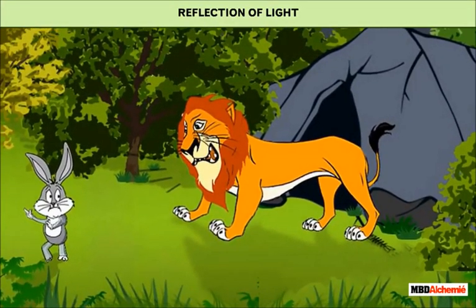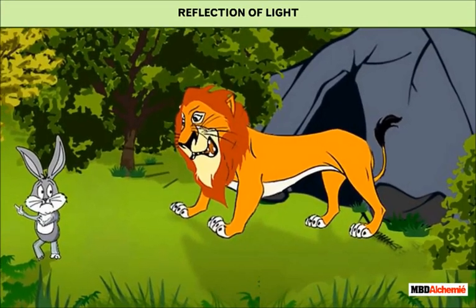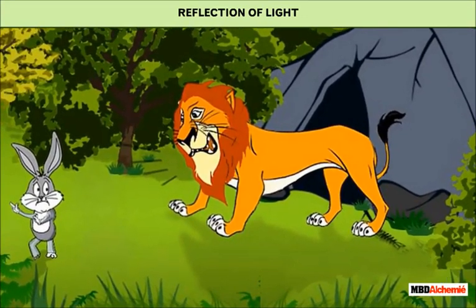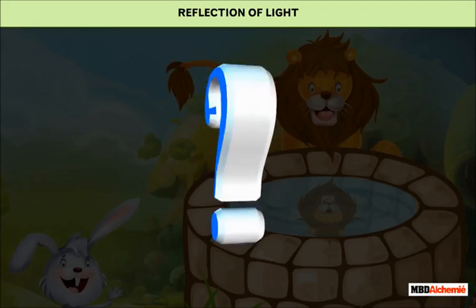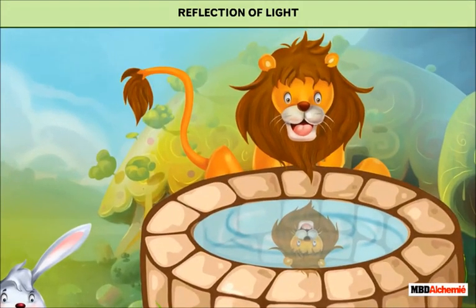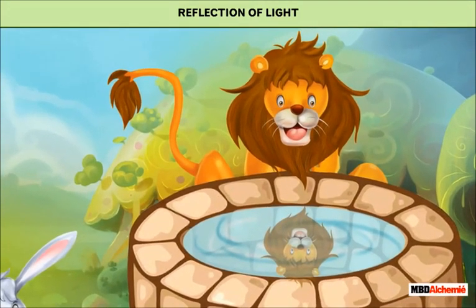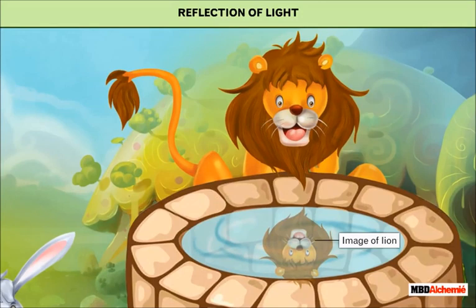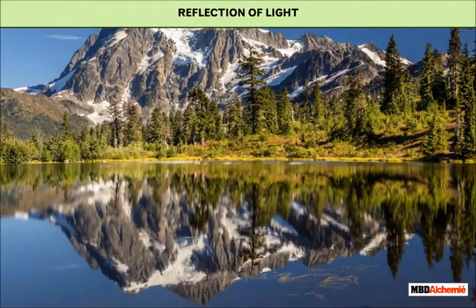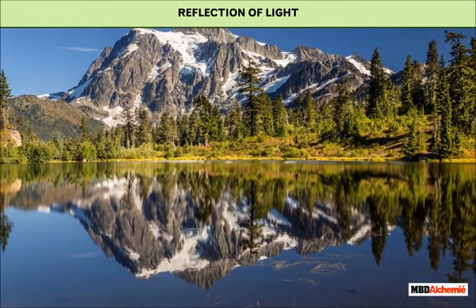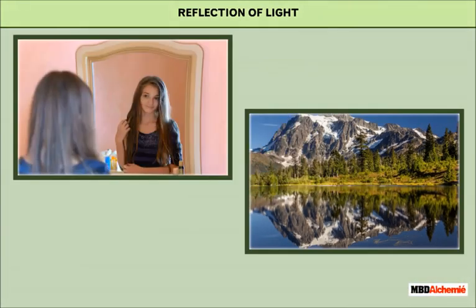Reflection of light. We all have heard the Panchatantra story of the lion and the rabbit. What do you think the lion saw in the water? There was no other lion in the water. The lion saw its own image in water, formed due to reflection of light. You see yourself in a mirror. You can see the images of nearby mountains and trees in a lake. This is due to reflection of light.